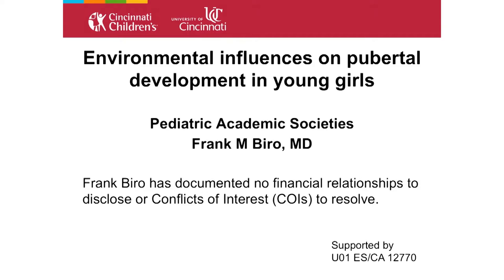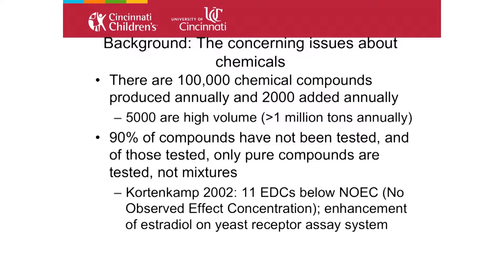Thank you for the kind invitation and the opportunity for a simple country doc to present with a stellar group. As we've alluded to, there are over 100,000 chemical compounds in the United States, with 2,000 being added every year, some being produced at greater than a million tons every year. Ninety percent of these chemicals have not been tested, and typically when we do testing, it's only with a single chemical, not mixtures.